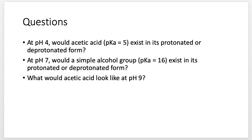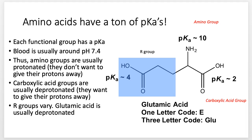Why are we talking about pKa so much? Amino acids — which make up proteins — have tons of pKas. You can have three pKas for the functional groups of amino acids: the amino group, the carboxylic acid group, and the R group. The R group is usually what we refer to as the functional group, though I sometimes accidentally use that term when I really mean the R group. Every amino acid has the amino group and carboxylic acid.